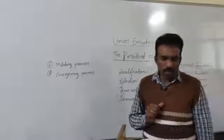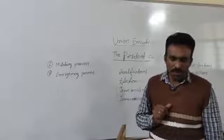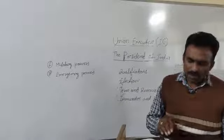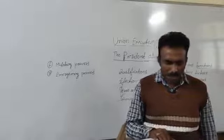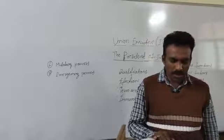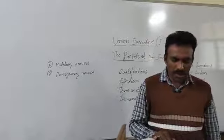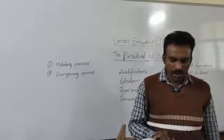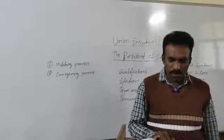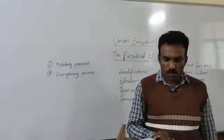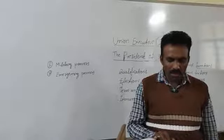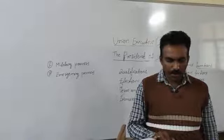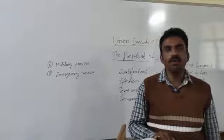Article 72 empowers the President to grant pardon, reprieve, or remission of punishment, or to suspend, remit, or commute the sentence of any person convicted of any offense.